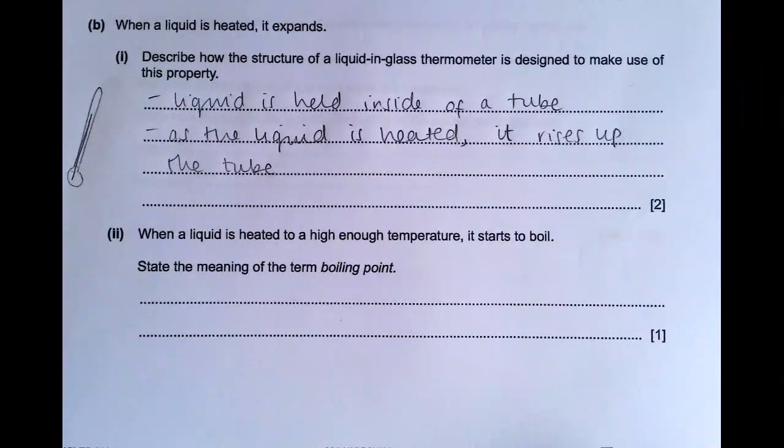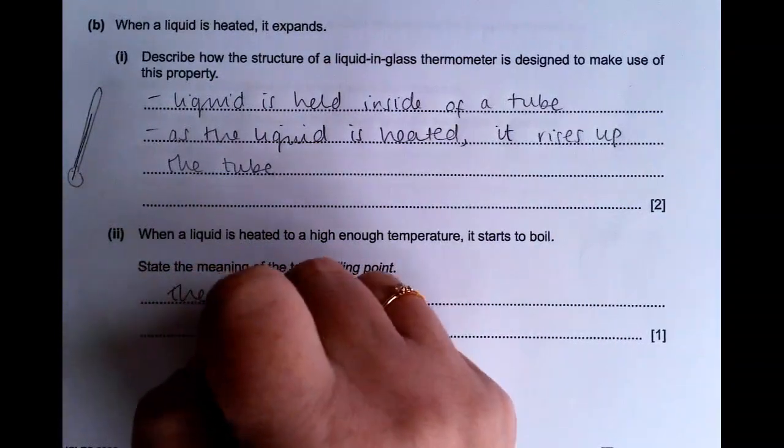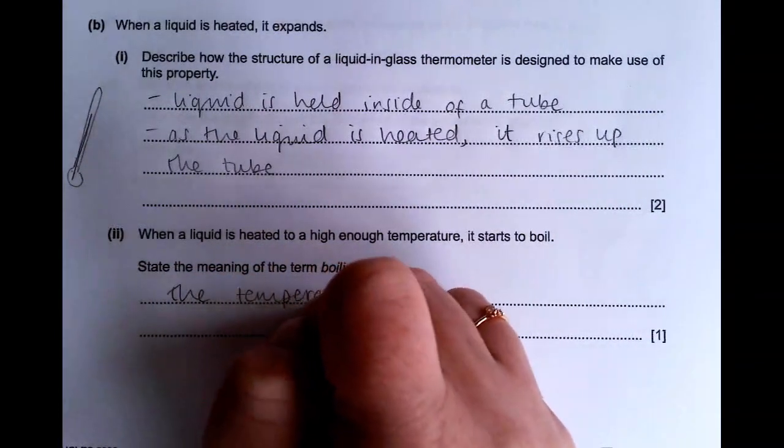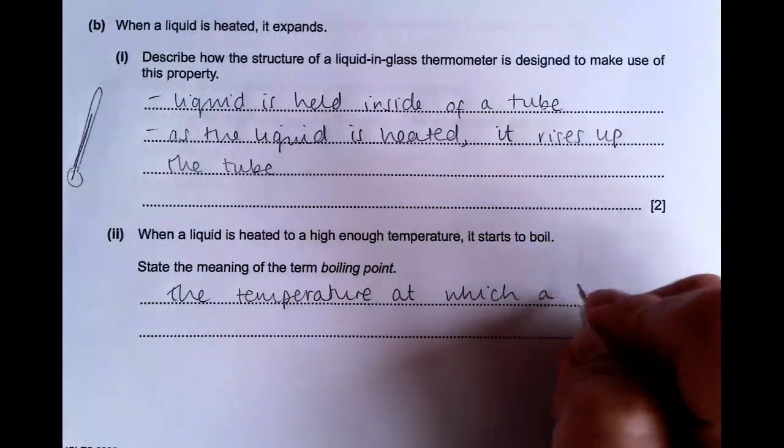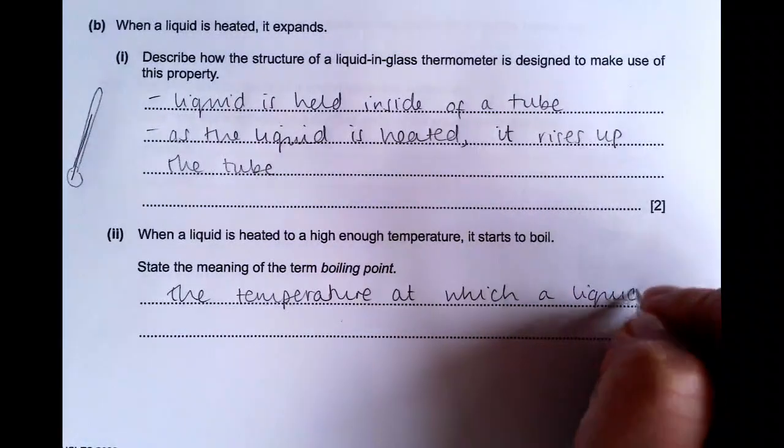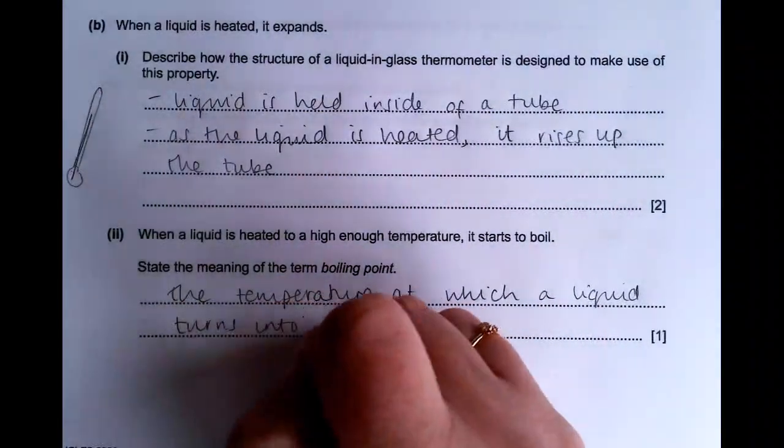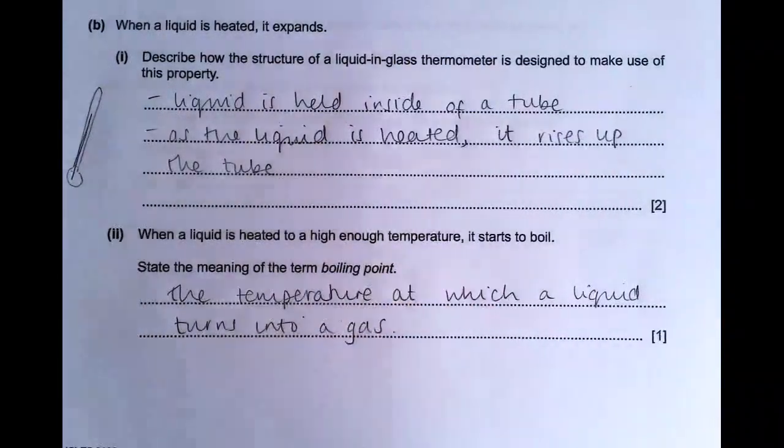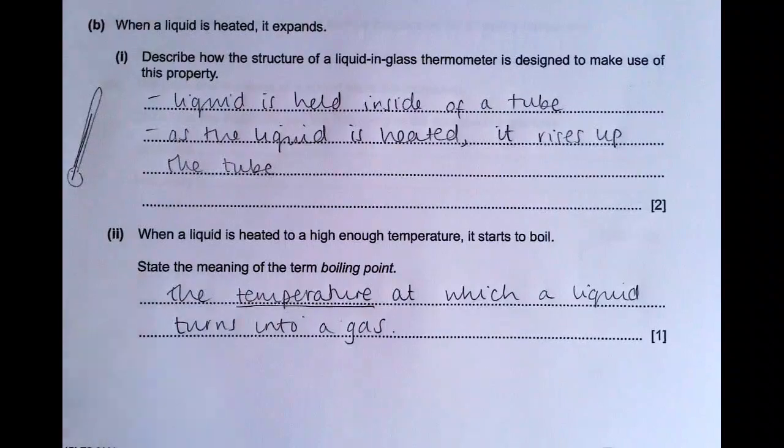And then when a liquid is heated to a high enough temperature, it starts to boil. State the meaning of the term boiling point. It is the temperature at which, so the temperature point, where a liquid turns into a gas. So you have to refer to temperature, and you have to refer to liquid and gas.